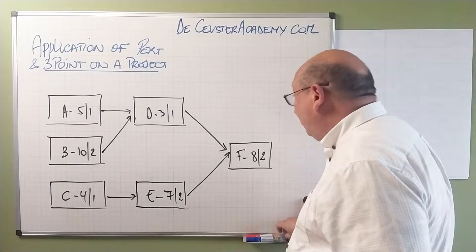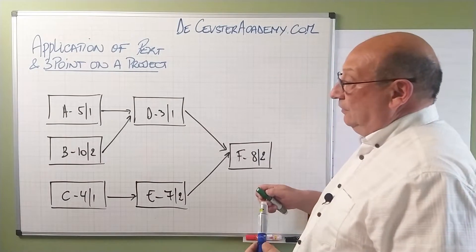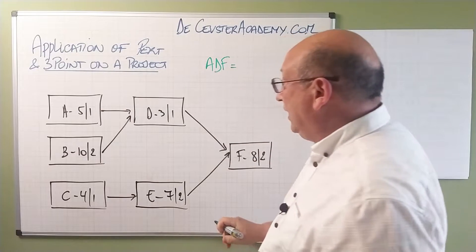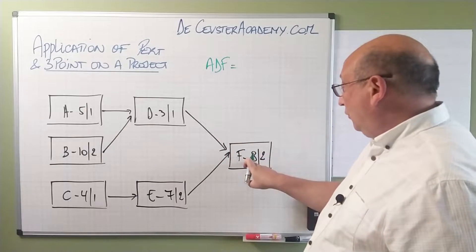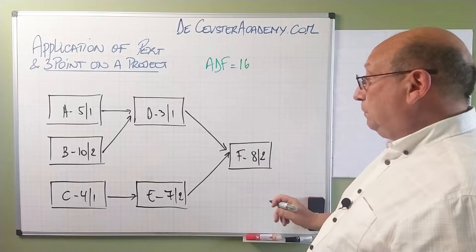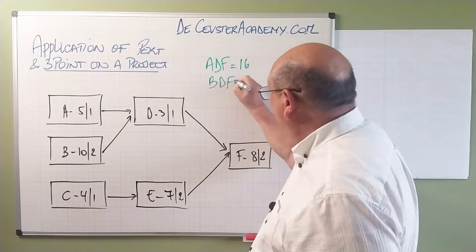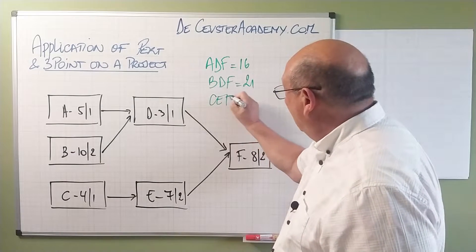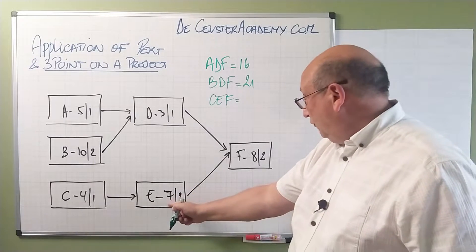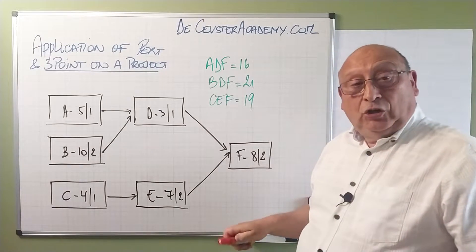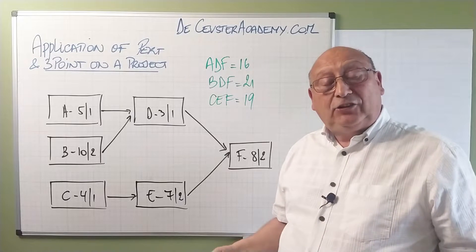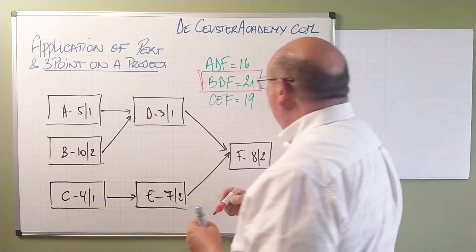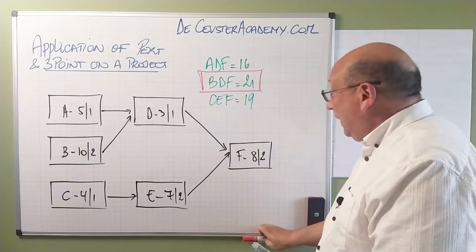What we have to do now is, for every path, calculate the duration. We have the path A-D-F, which has a duration of 5 plus 3 plus 8 — that's 16. Then we have the path B-D-F, equal to 10 plus 3 plus 8, which is 21. And then the last path is C-E-F, with a duration of 4 plus 7 plus 8, which is 19. Remembering the definition of the critical path, the critical path is the path with the longest duration — in this case, B-D-F.